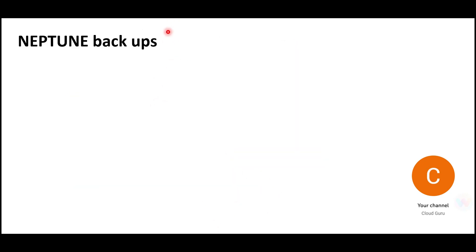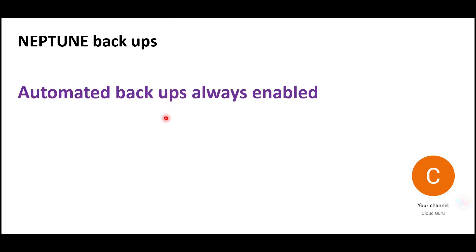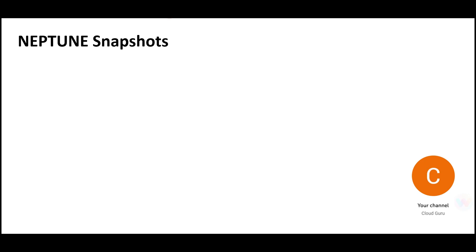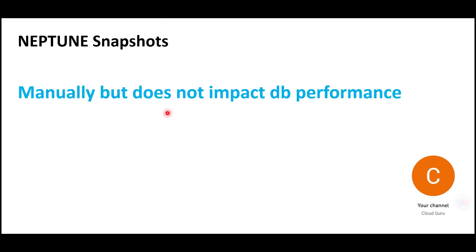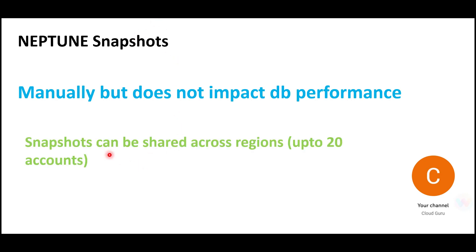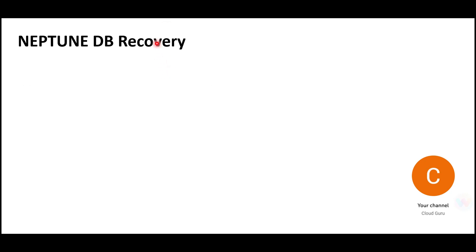For backups, you don't have to do anything — automated backups are always enabled. If asked in the certification, remember you don't have to do anything; it is always enabled. For snapshots, you have to take them manually, but taking a snapshot has zero impact on your production database — even if your production database is active and people are using it. Snapshots can be shared across regions, but only up to 20 accounts.